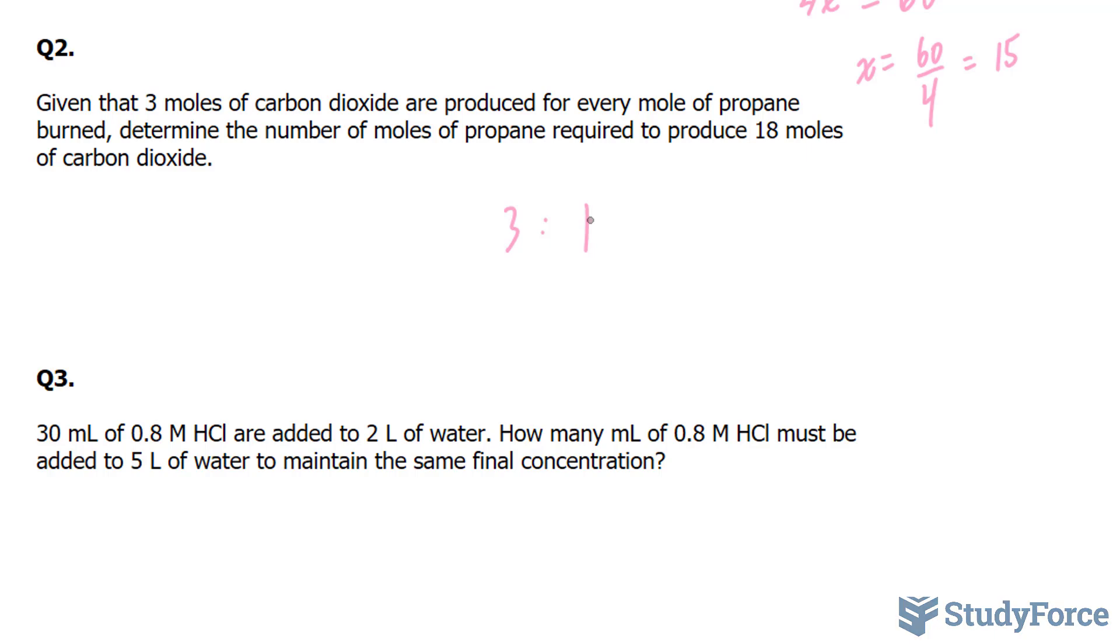Now they're telling us that we have 18 moles of carbon dioxide, and they want us to find out the equivalent of propane. So we're going to use one of the two methods I showed you above. Notice that this 3, when multiplied by 6, gets you 18. So 1 times 6 will give you x, which is equal to 6.